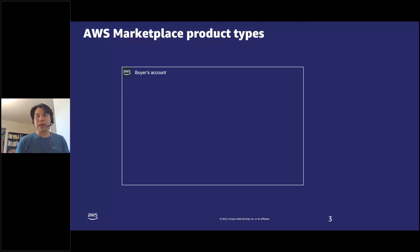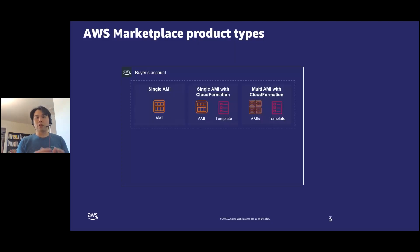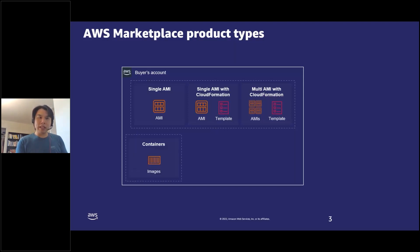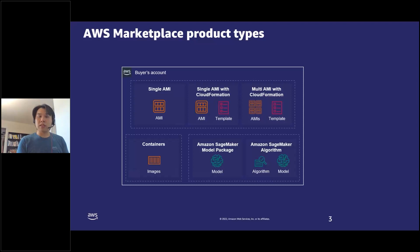In general, there are two main categories of product types. The first is products and software that deploy directly into the buyer's AWS account — software that runs in the buyer's account without the seller's involvement. This includes single AMIs (Amazon machine images), which are virtual machines deployed onto EC2 instances. We also have container product types — Docker container images that deploy in the buyer's AWS account. There are also SageMaker resources such as model packages and algorithms that can be deployed into the buyer's account.